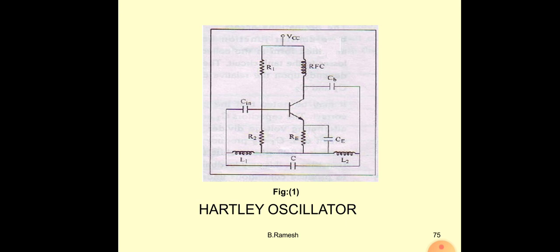The CB coupling capacitor allows the AC signal and blocks the DC signal. If that capacitor is not present, both AC and DC voltage would appear at the output side. If you are not getting sufficient amplitude, you can connect the next stage by providing VCC, which is the DC supply voltage.